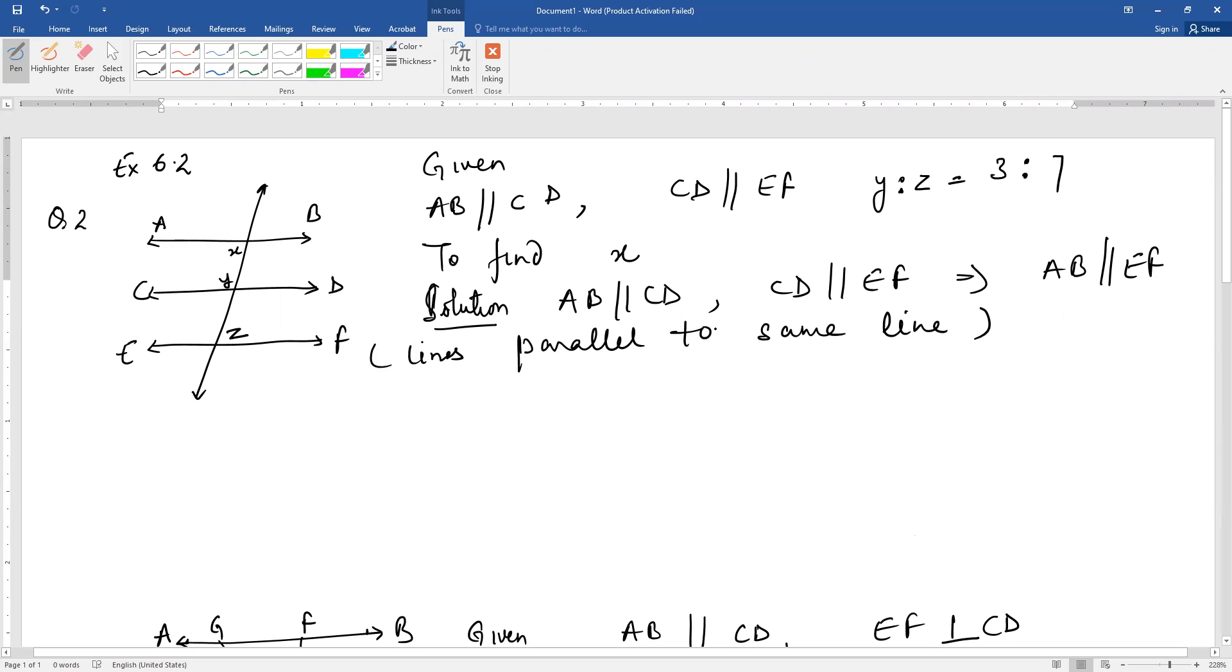Now AB is parallel to EF. That means angle X and angle Z are alternate interior angles. Therefore X is equal to Z, alternate interior angles.